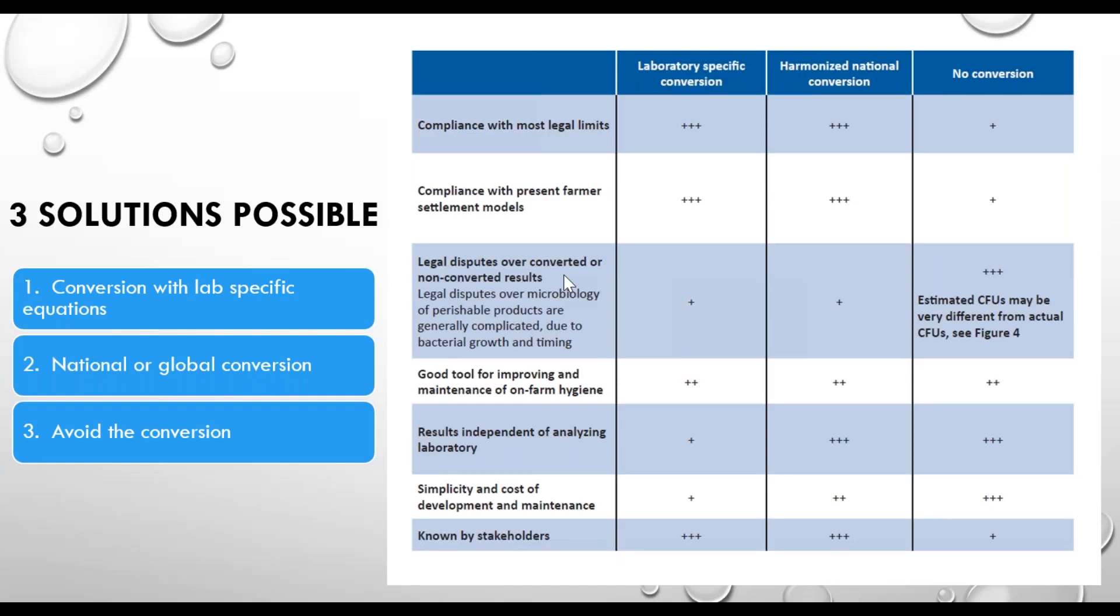One needs to understand this properly, and that's where all the stakeholders in this lineup need to be educated or determine, do we need a conversion factor at all? That's where I want to move to what solutions are possible. We can use a lab-specific equation, but as mentioned, that's going to be tricky because you need very specialized, expensive time, a real lab with a lot of activity. That's one option, or you can have a national or global conversion. But once again, as you see from the previous graph, what will this be? It can be quite a wide variety of variance. The third option could be to say we avoid the conversion, we don't use it, we use the IBC.